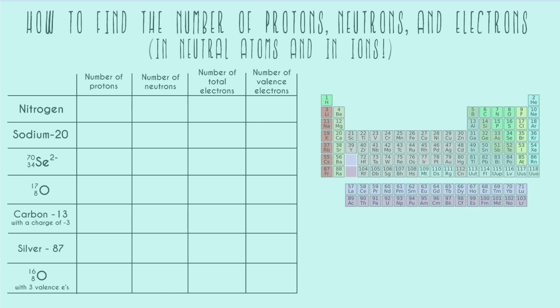In this video, I'm going to talk about how to find the number of protons, neutrons, and electrons in both neutral atoms and in ions, which are atoms that have a charge.